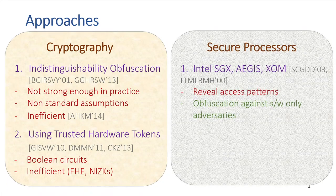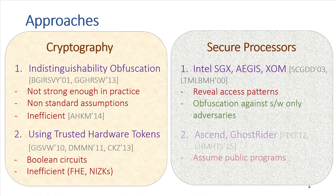The architecture community has developed secure processors such as Intel SGX, Aegis, and ZOM. At a high level, these provide confidentiality and integrity but reveal memory access patterns. For a software-only adversary, they do provide some degree of obfuscation. Works such as Ascent and Ghost Rider protect memory access patterns, but they assume public programs and do not attempt to hide the programs themselves.